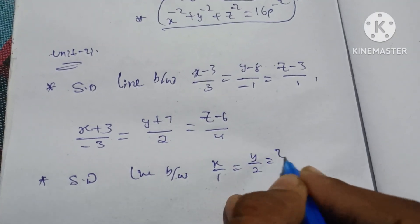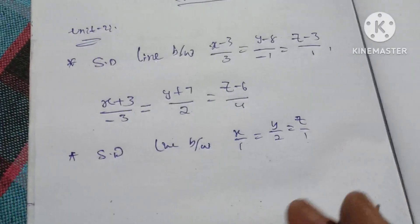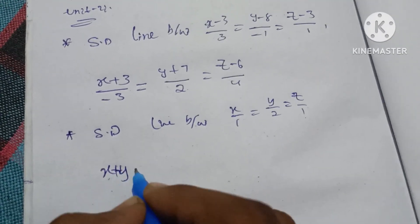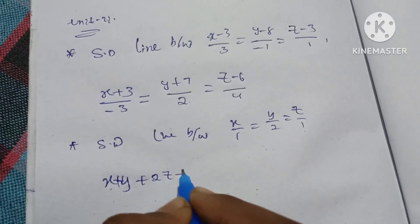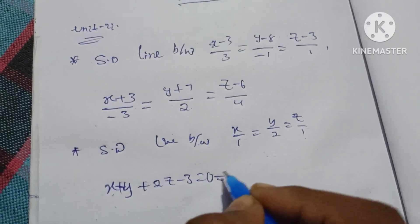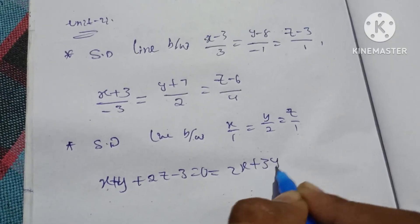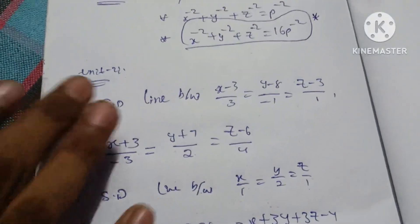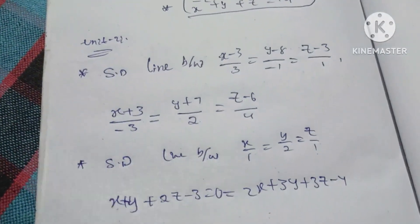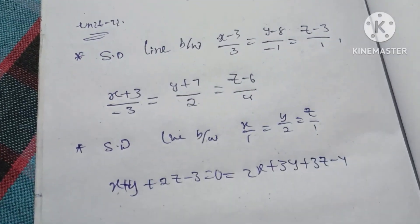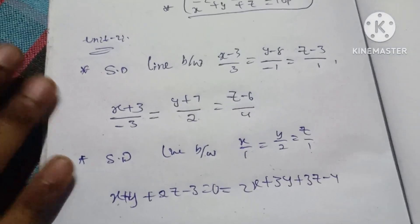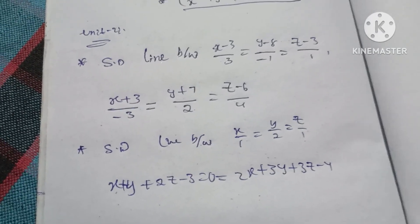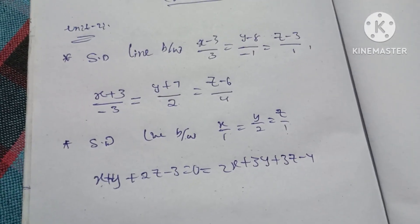We have one line and one equation: x + y + 2z − 3 = 0 and 2x + 3y + 3z − 4 = 0. We have two methods. Unit 2 carries 10 marks, covering length and equations of shortest distance.